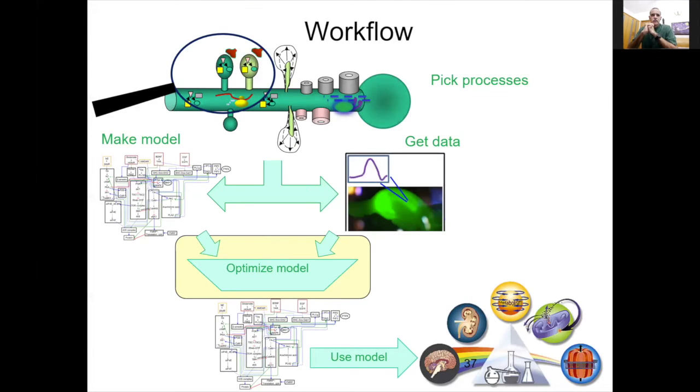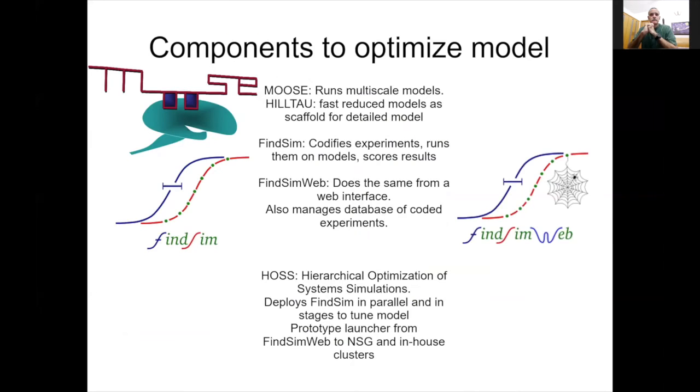Now we have the model and we have tons of data and we need to make the model more accurate. We have an optimization pipeline. As you gathered from the previous talks, this is a very non-trivial process. Of course we use MOOSE to run the big models, but we also have developed something called HillTau, which is a very fast way of running reduced models, which we can use as a scaffold to help us to get to the more detailed model. It's an abstraction, if you like, of the chemistry. There's FindSim which codifies the experiments, FindSimWeb, and then we have a hierarchy optimization technique and so on. There's many layers to doing this calculation.